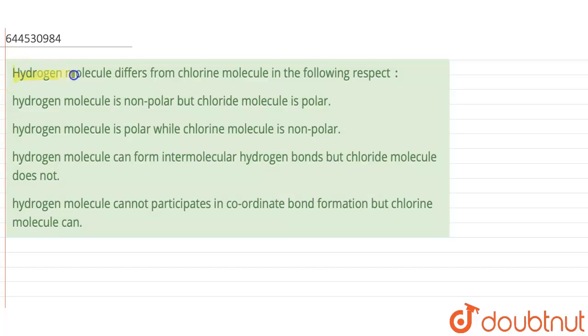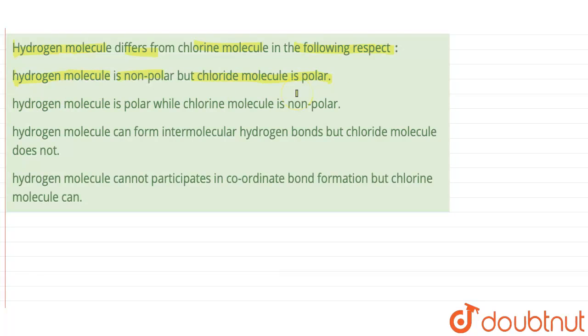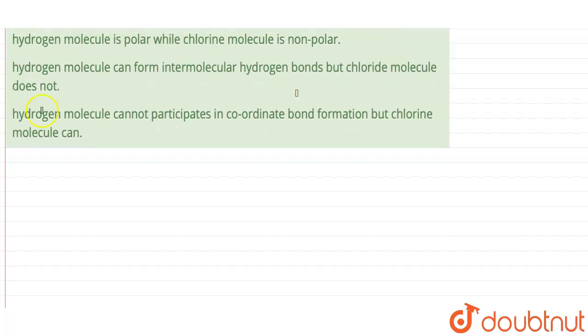it is given that we need to find how the hydrogen molecule differs from chlorine molecule in the following respect. Four statements are given; we have to find the correct statement. The first says that hydrogen molecule is non-polar but chloride molecule is polar.